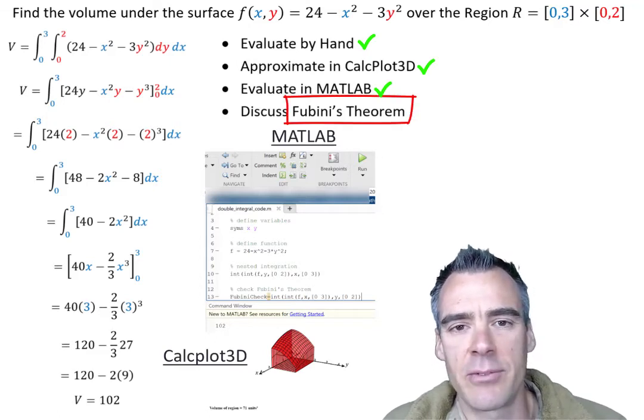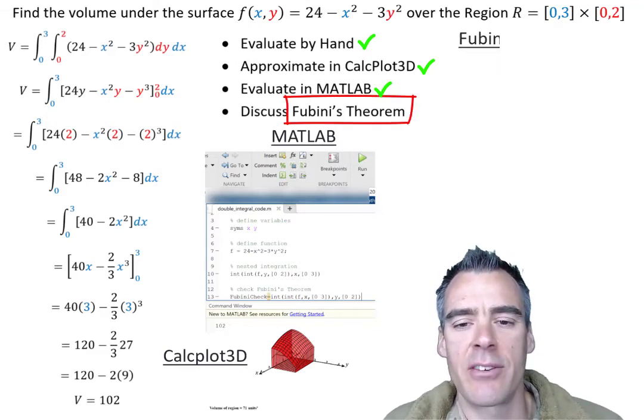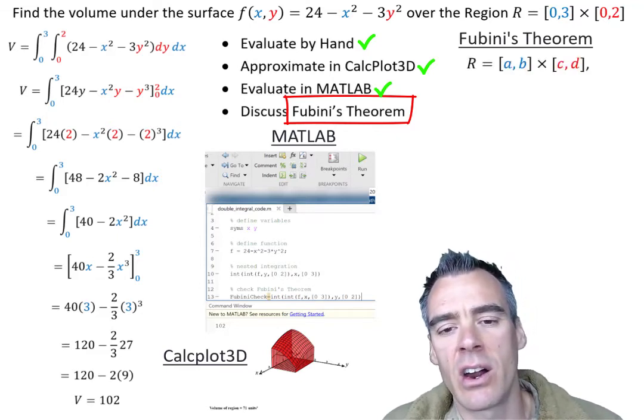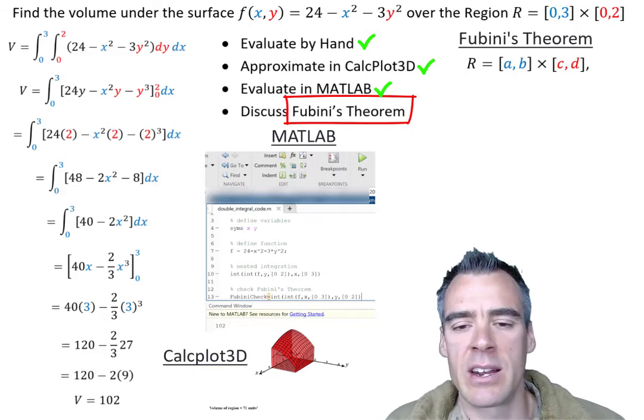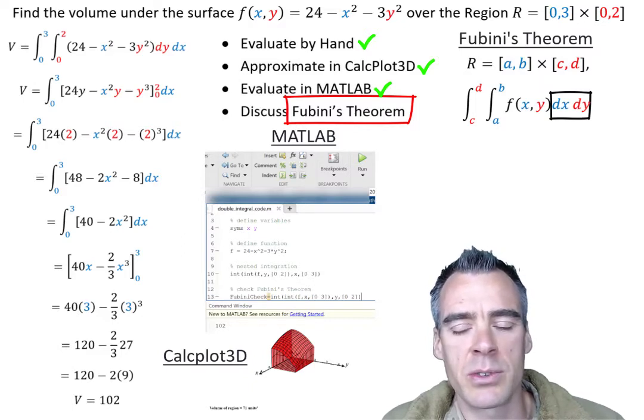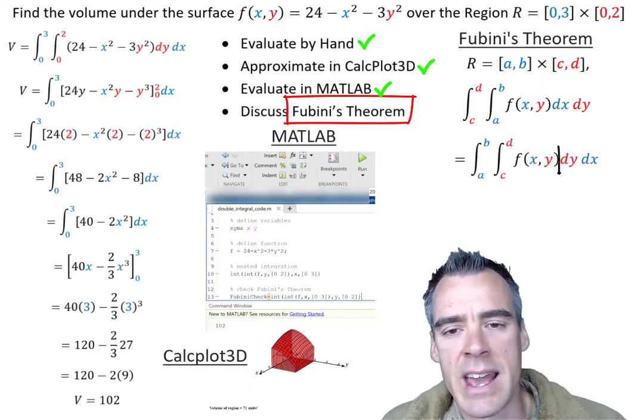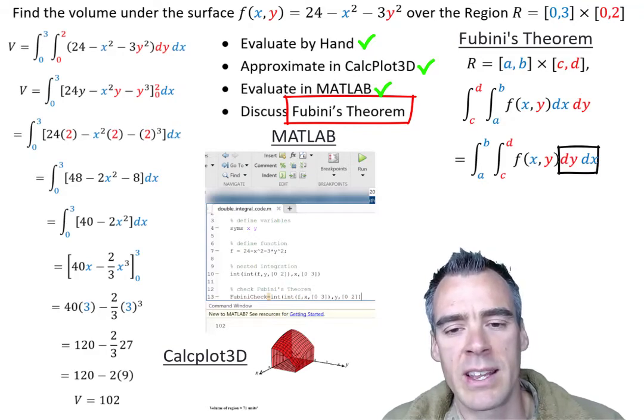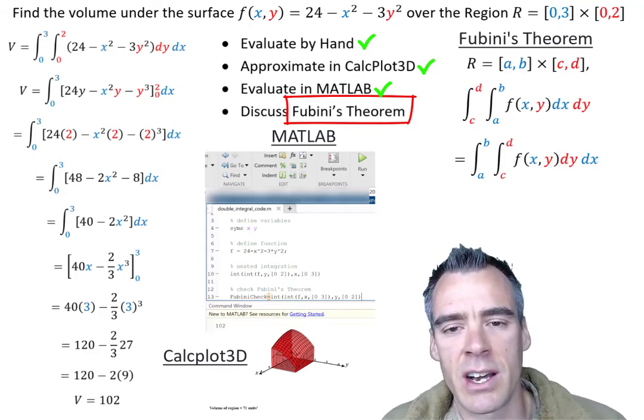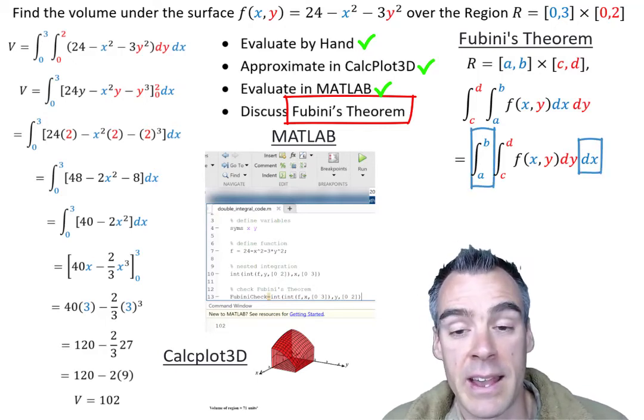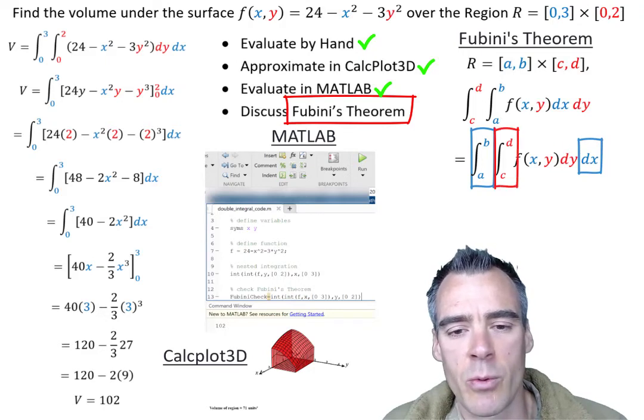And Fubini's theorem, formally stated, says that for our region R, where x is between A and B and y is between C and D, our integral integrated with respect to x and then y is equal to our integral integrated with respect to y and then x. And notice that this equality is certainly contingent on those limits of x following x and those limits of y following where the y is.